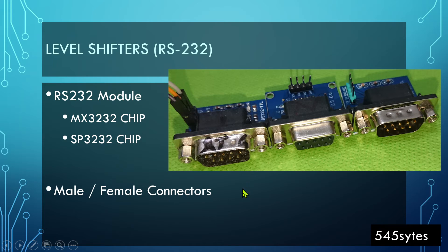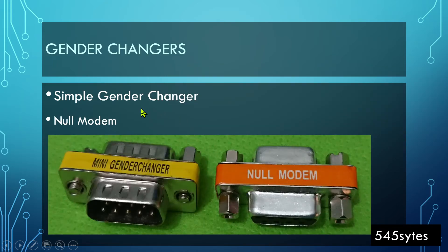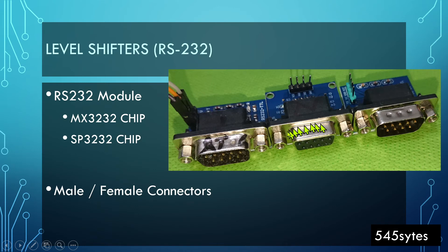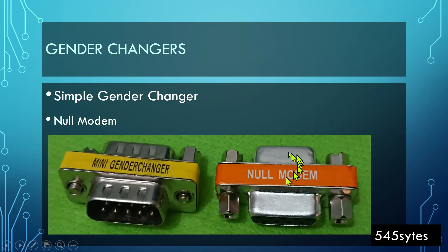If you don't have the right connector, you can use gender changers. There are two types: a simple gender changer which just changes the gender, and another called a null modem, which also swaps the RX and TX pins. That's what we need when changing gender, because the receiving and transmission pins also change. If you happen to get the wrong module, you will need this null modem gender changer.